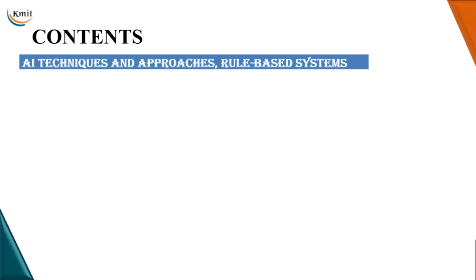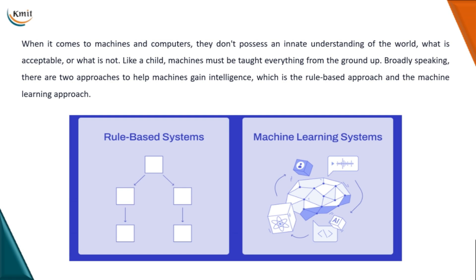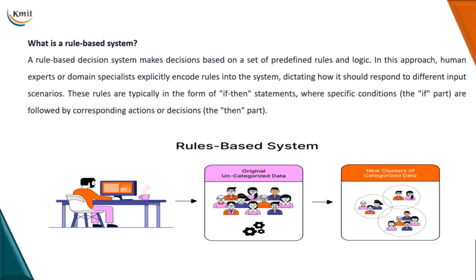Hello, so today in this session I would like to talk about different AI techniques and approaches, out of which I would like to focus more on rule-based systems. When it actually comes to machines and computers, they don't possess any internal knowledge. They just have the understanding of the world which is dependent on how we teach them. Broadly speaking, there are two basic approaches to help machines gain intelligence: rule-based systems and machine learning.